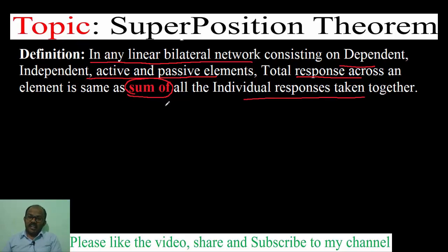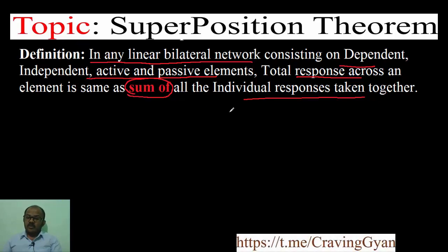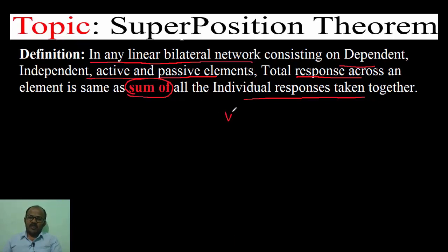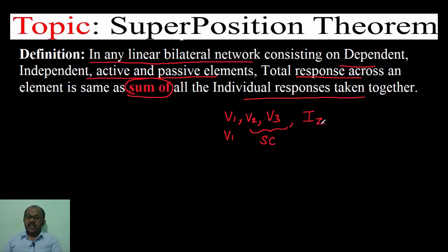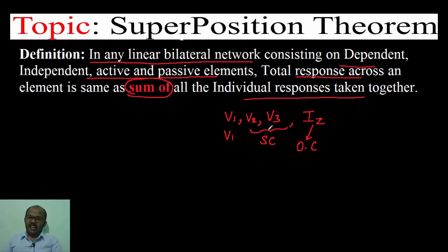The total response you find using nodal analysis, mesh analysis, loop analysis, Thevenin's theorem, or Norton's theorem — the final answer is the same as the individual responses taken together. When taking an individual response, say you have voltage sources V1, V2, and V3: when considering V1, V2 and V3 must be treated as short circuits. If you also have a current source, that current source must be treated as an open circuit. You consider one independent source at a time and solve the network.